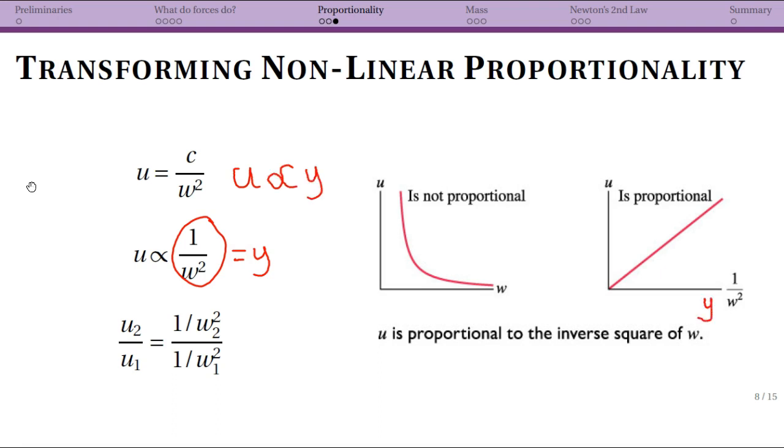Well then we can make a plot like this, right? So all you have to do is take your 1 over w squared and have that be your value rather than just w and now you get a straight line.